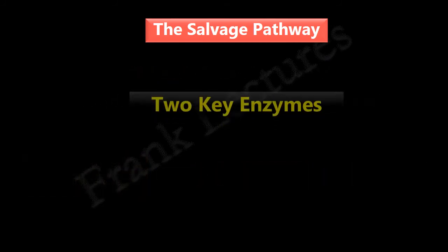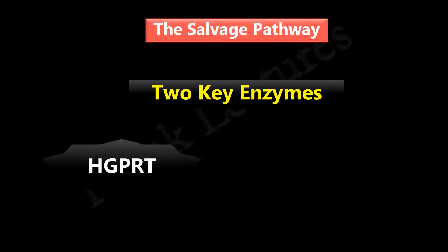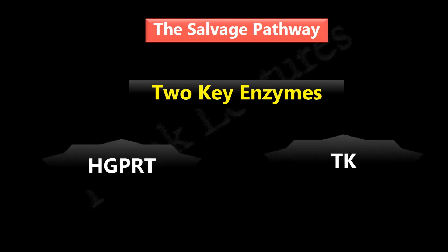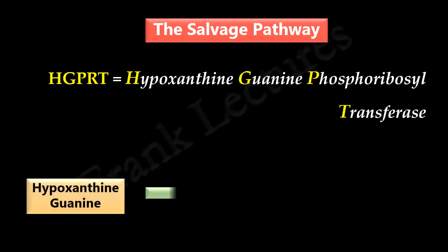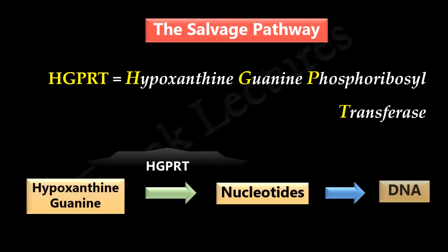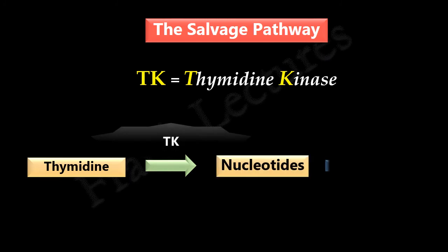The salvage pathway involves two key enzymes abbreviated as HGPRT and TK. HGPRT stands for hypoxanthine-guanine phosphoribosyltransferase — this enzyme catalyzes the formation of nucleotides from hypoxanthine and guanine. The second enzyme, TK, stands for thymidine kinase — this enzyme converts thymidine into the corresponding nucleotide.